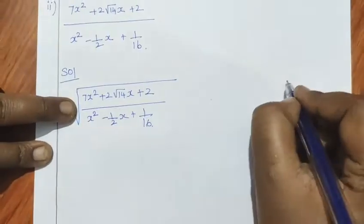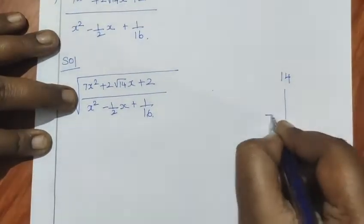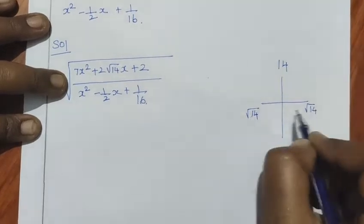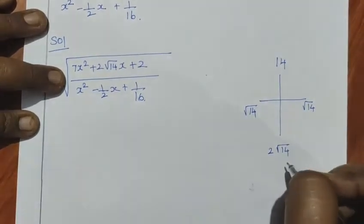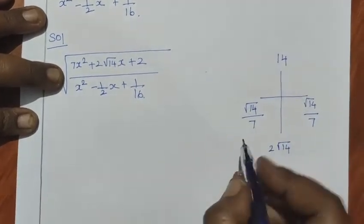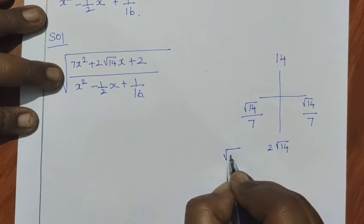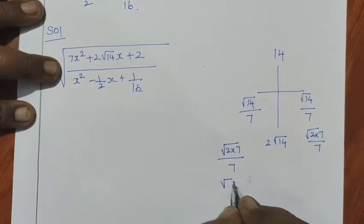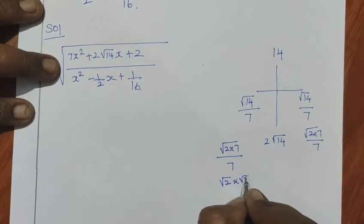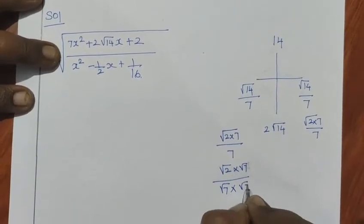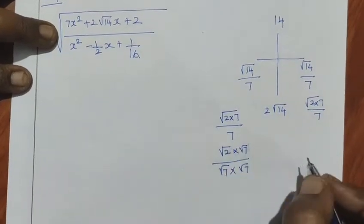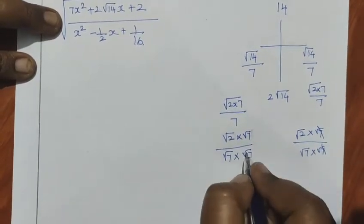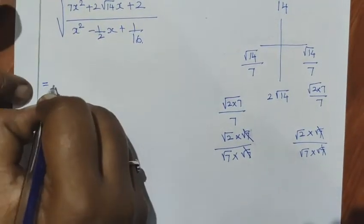For the numerator 7x squared plus 2 root 14 x plus 2: 7 times 2 is 14. The coefficient of x is 2 root 14, so we split it as root 14 into root 14. Root 14 plus root 14 is 2 root 14. Now root 14 can be split as root 2 into root 7. We split 7 as root 7 into root 7 so that root 7 cancel root 7 cancels, giving root 2 into root 7 plus root 2.